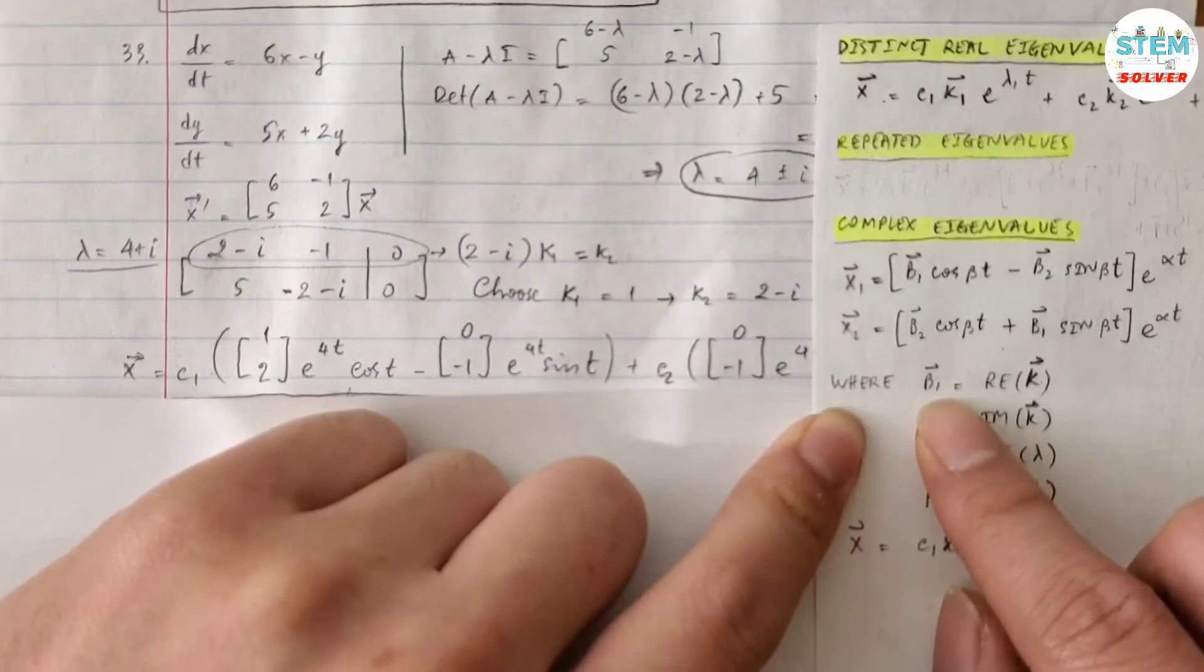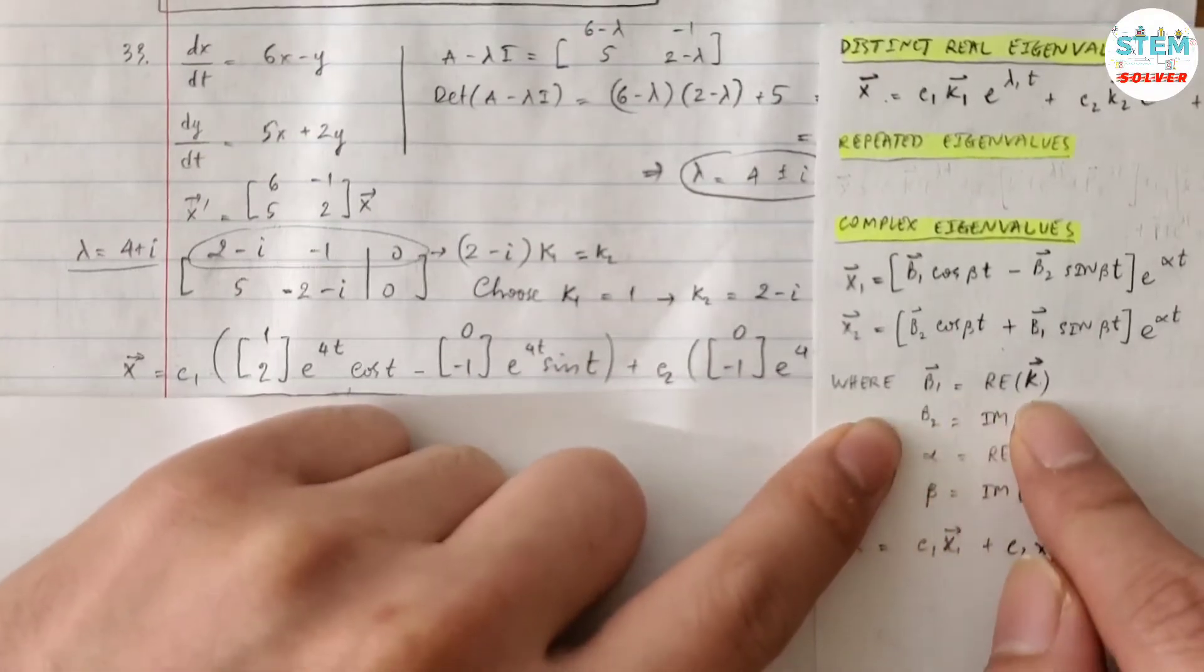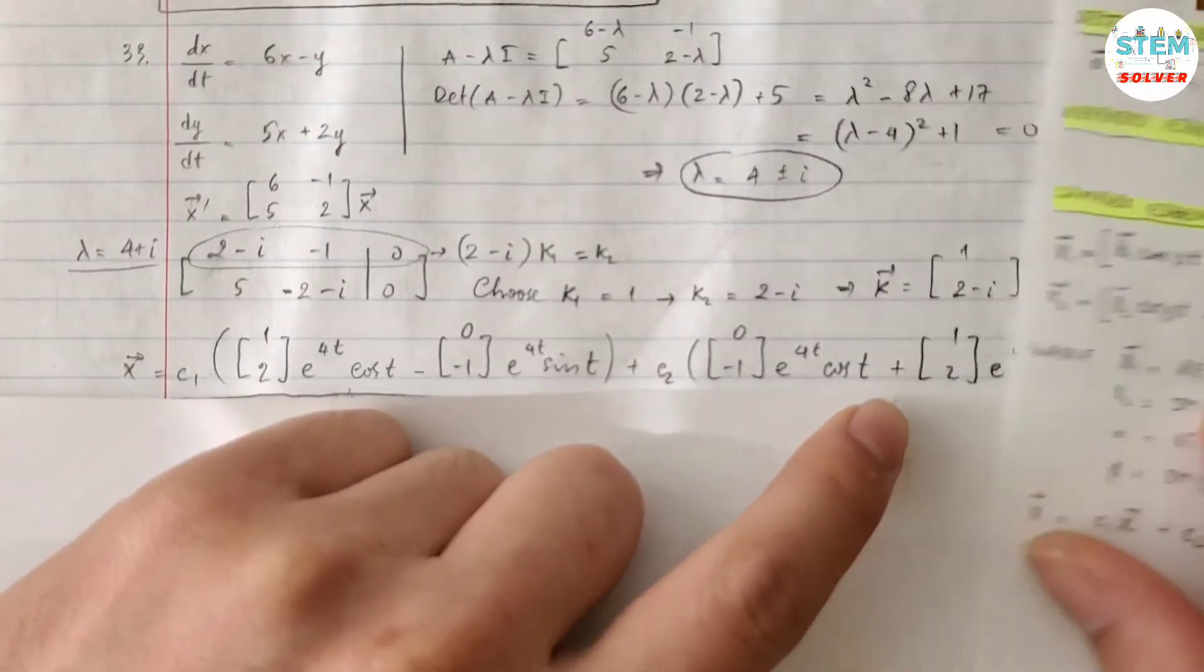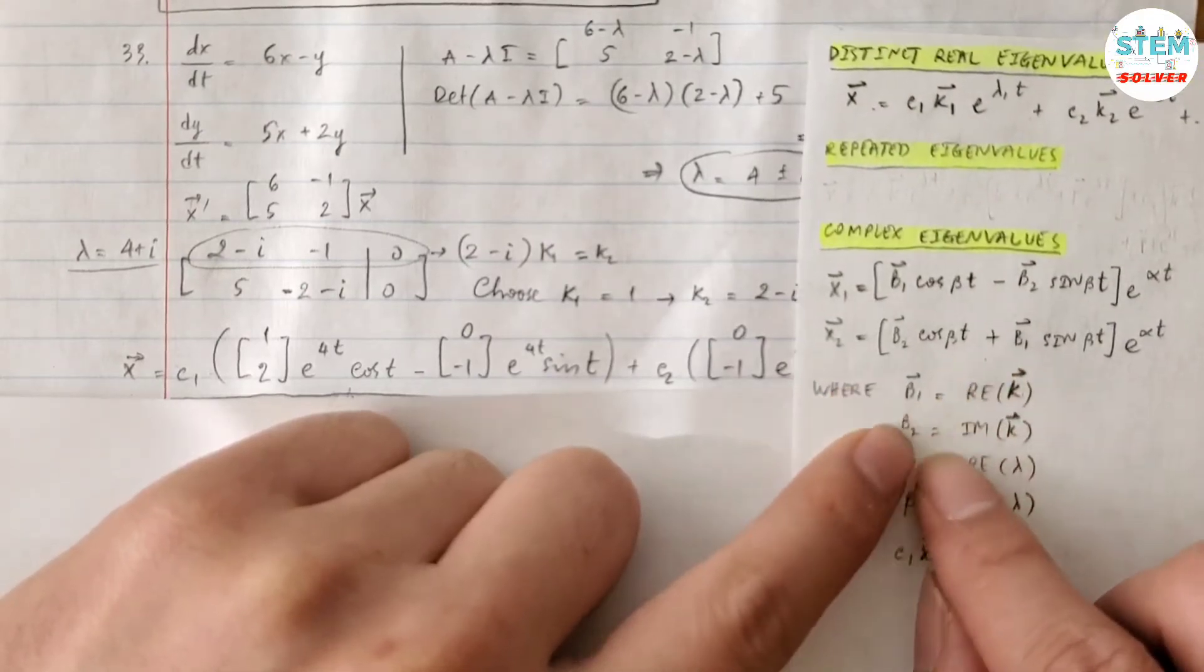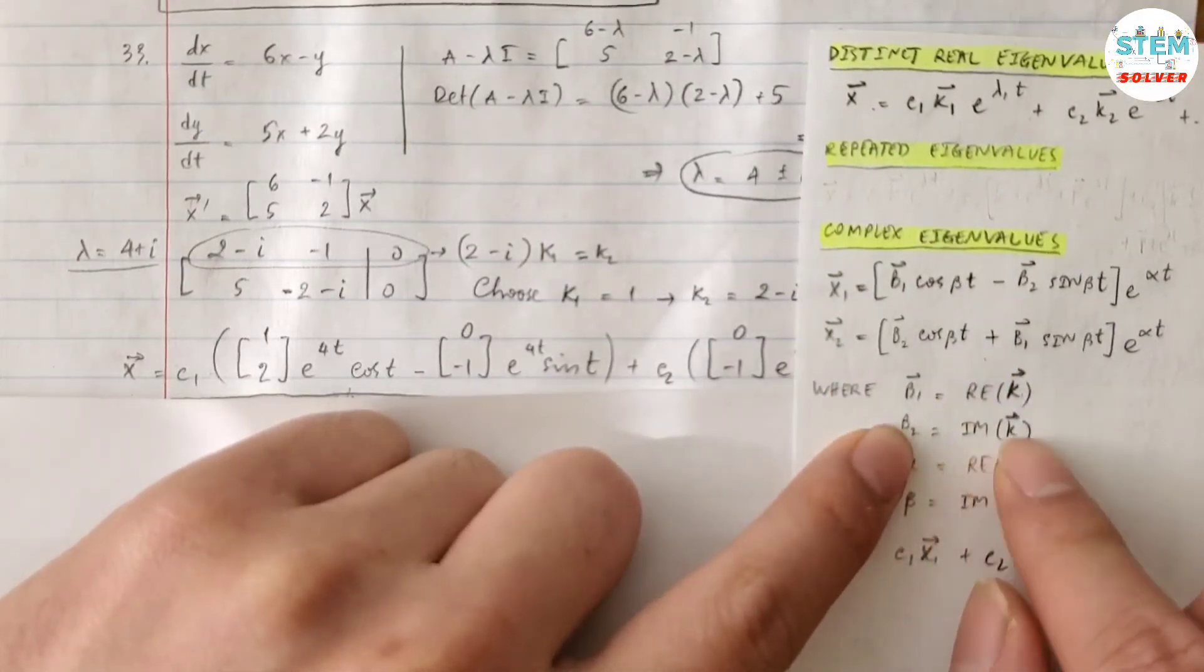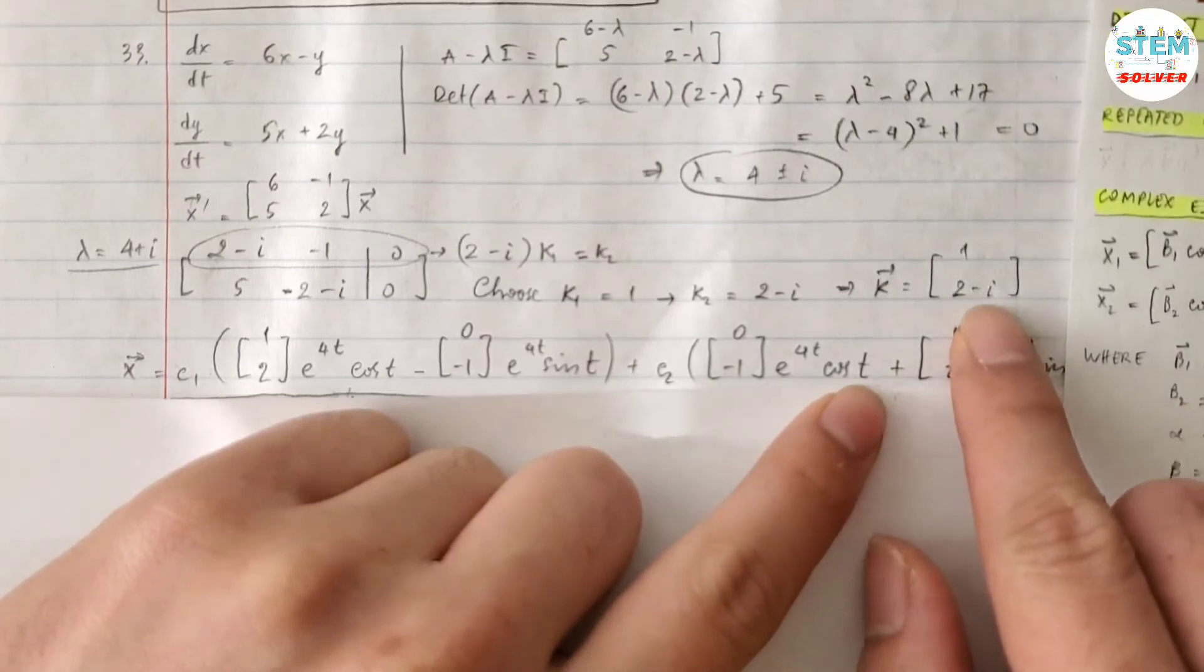What is vector b1? Well, vector b1 is the real value for vector k you just found. In this case, I have [1, 2], okay? Vector b2 is imaginary part of vector k, which is [0, -1], okay?